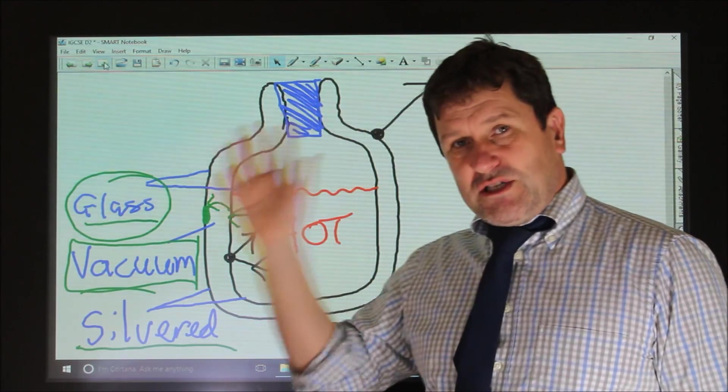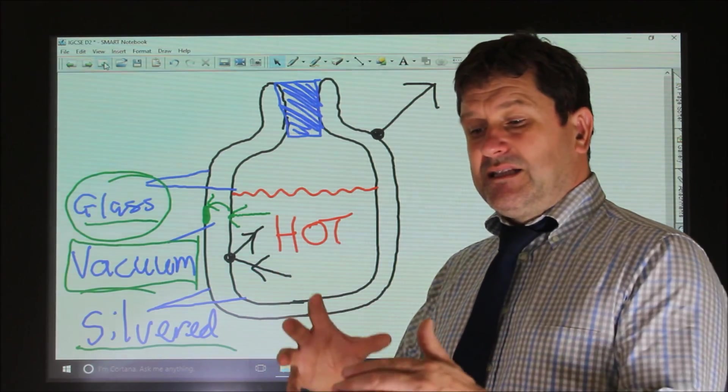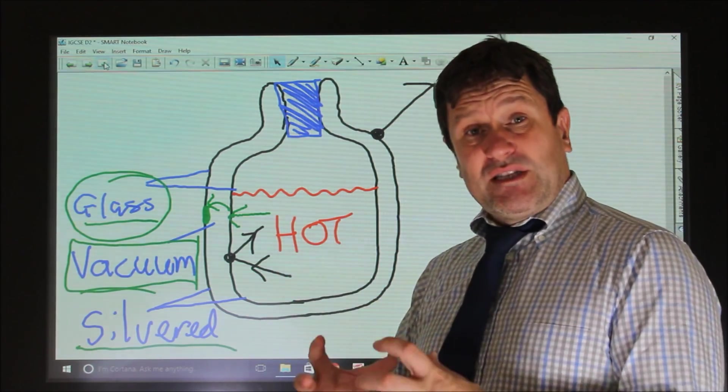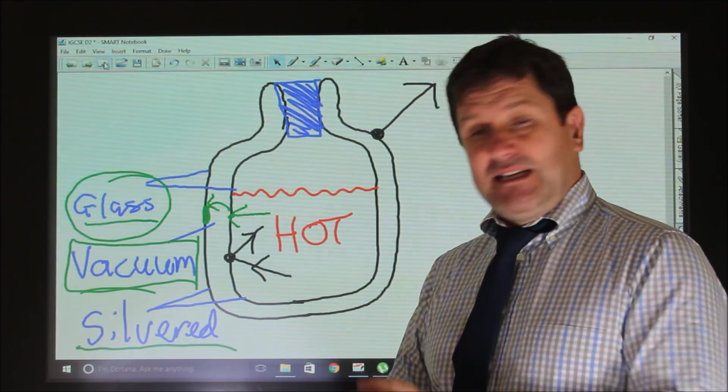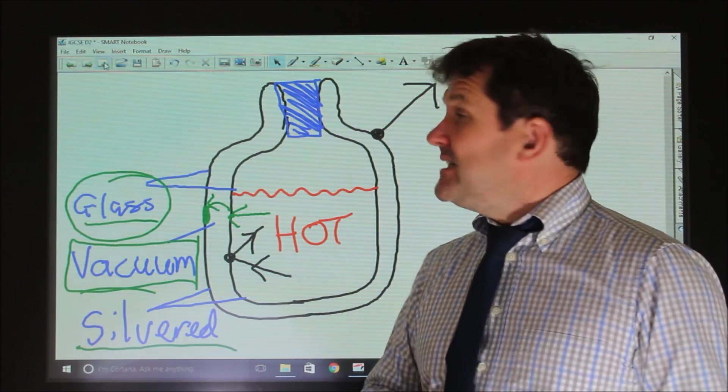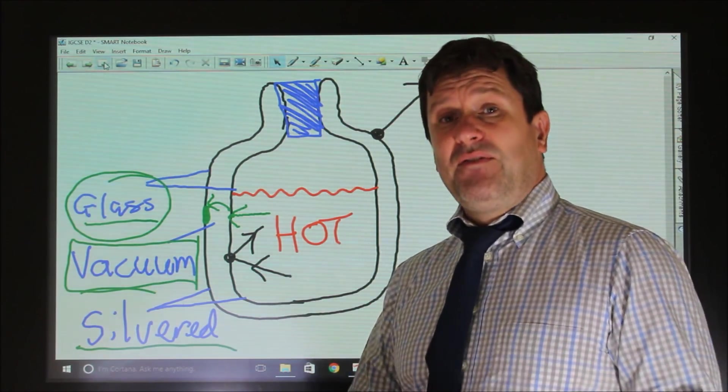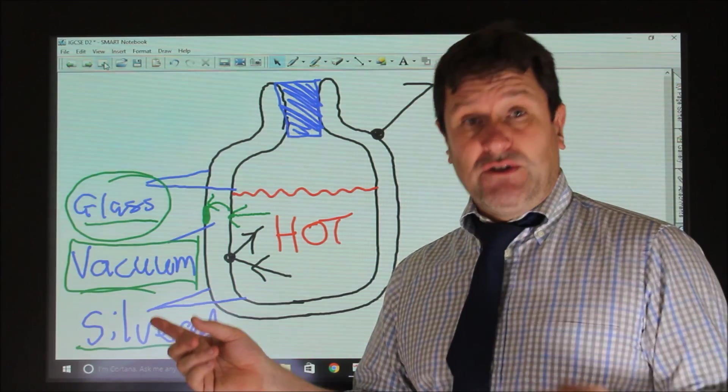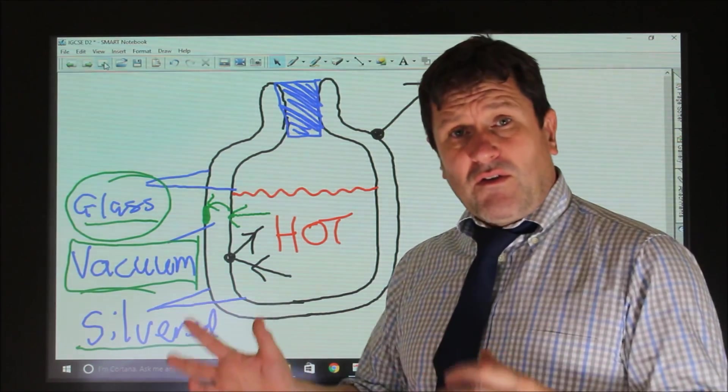The cork stopper works because it contains air, and we would say air is an insulator. It is a poor conductor of heat, it's an insulator, and therefore prevents heat loss by conduction. That's not enough.